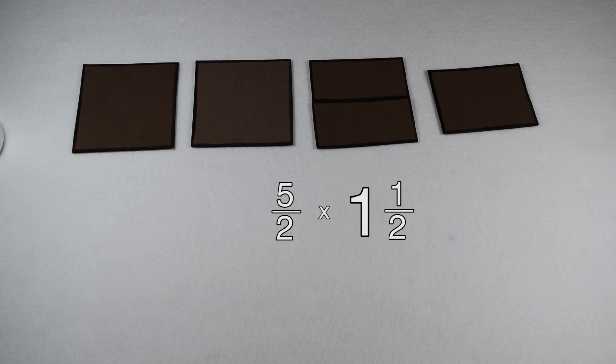I can then do the same thing with one and a half. Two times one gives me two, plus my one piece in the numerator, gives me a total of three. So one and a half would be worth three halves.